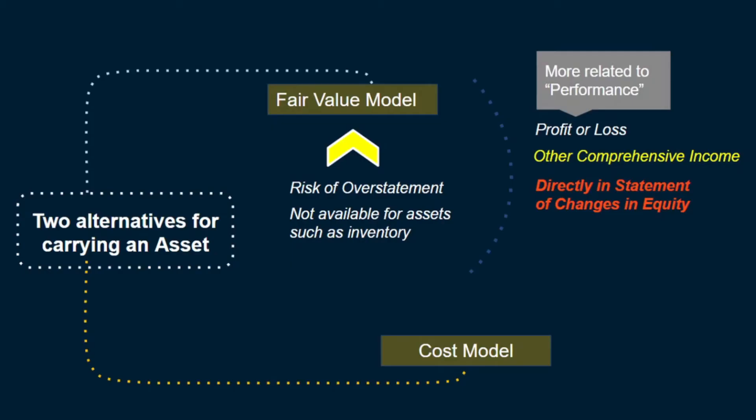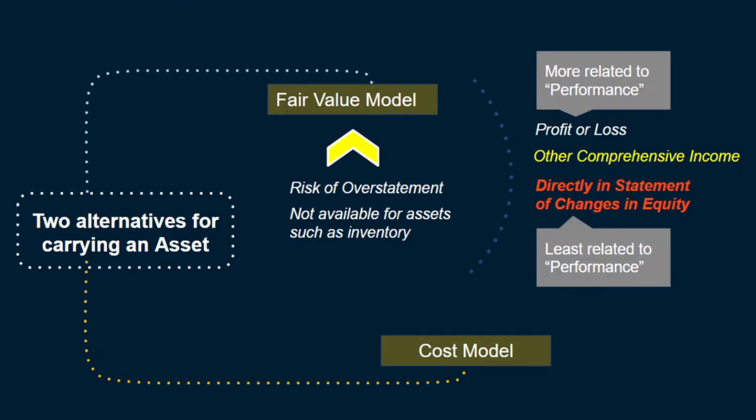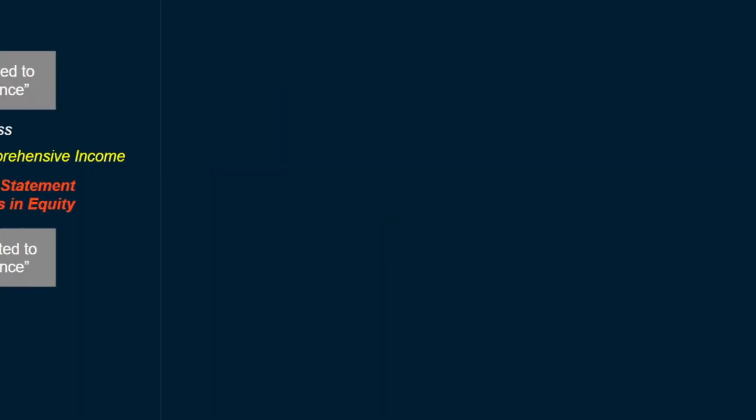At the other end of the spectrum, when we recognize something in the statement of changes in equity, we are trying to abstract things away — to signal that this change has hardly anything to do with the performance of the entity. If all of this makes sense, we can use the same analogy for understanding the IFRS 9 classification requirements.